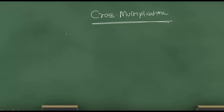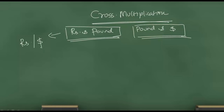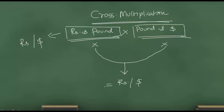Let us say you have the exchange rate between rupees and pound, and you also have the exchange rate between pound and US dollar. Then it would be possible for you to find the exchange rate between rupees and dollar. By establishing a relationship between these two, you can find the value of rupees per dollar. In cross multiplication, we take the product of these two exchange rates, and that product gives you the derived exchange rate — rupees per dollar.